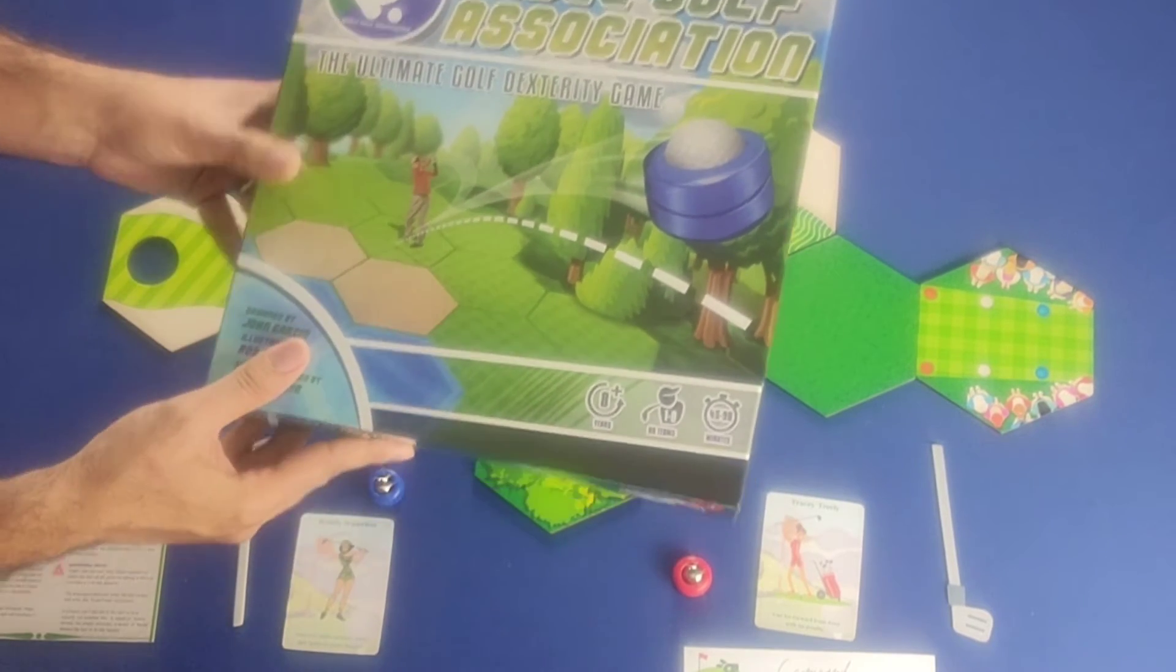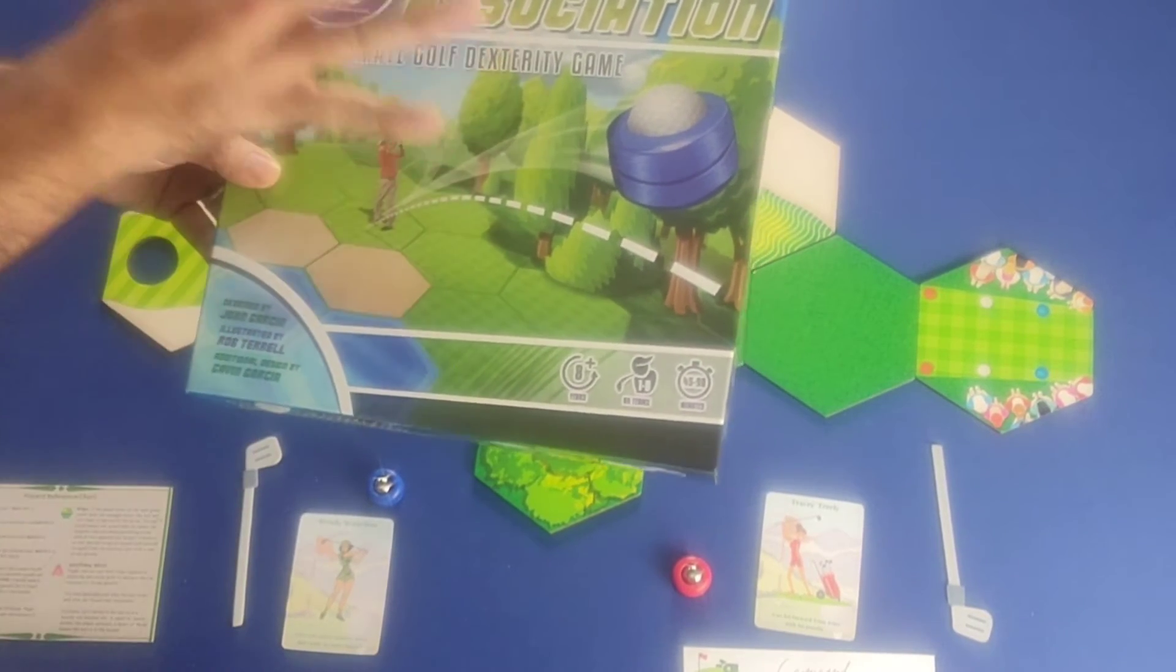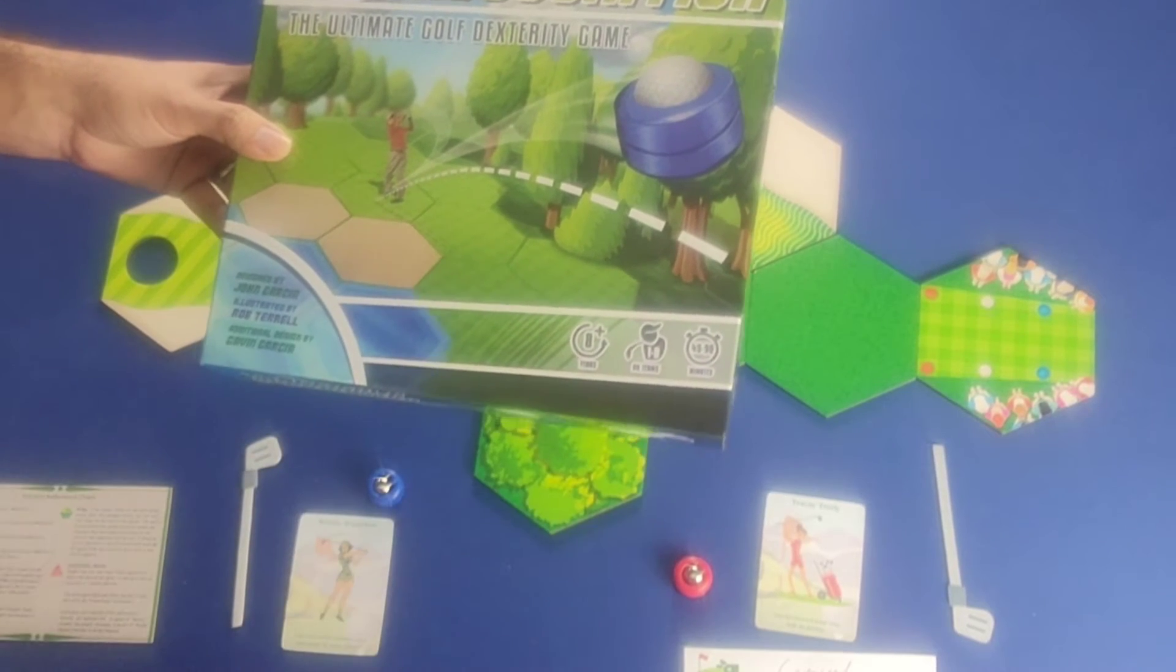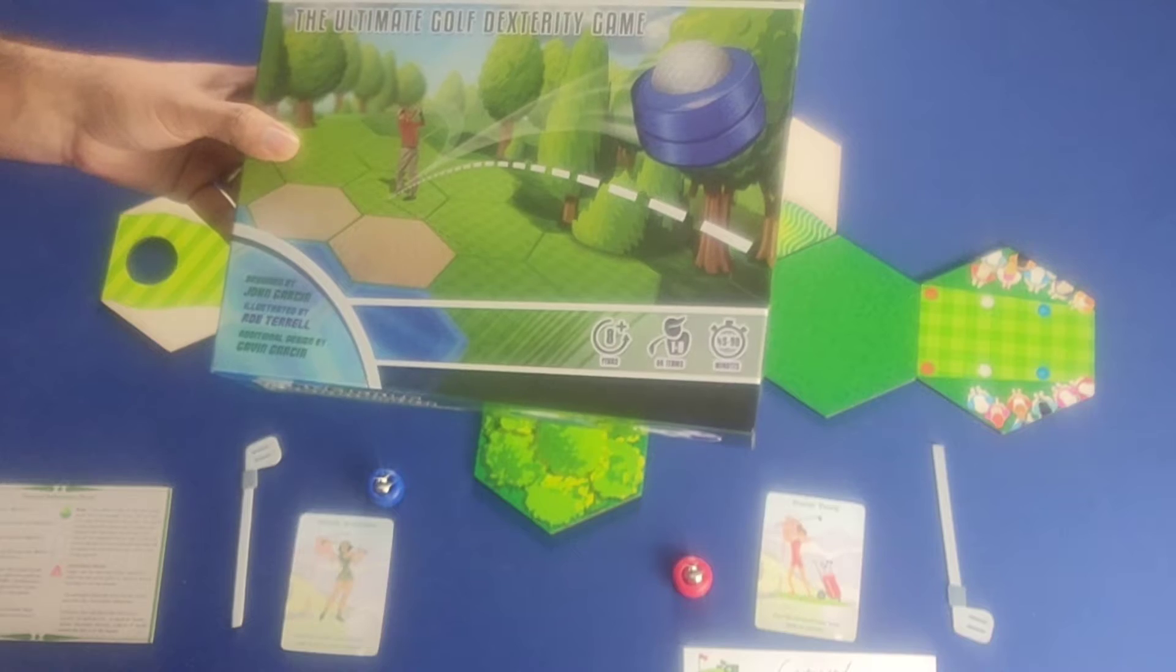Now, Table Golf Association, referred to as TGA, is just that. It's a golf-themed dexterity game for anywhere from one to eight players, estimated game length of 45 to 90 minutes, and a recommended age of eight and over.